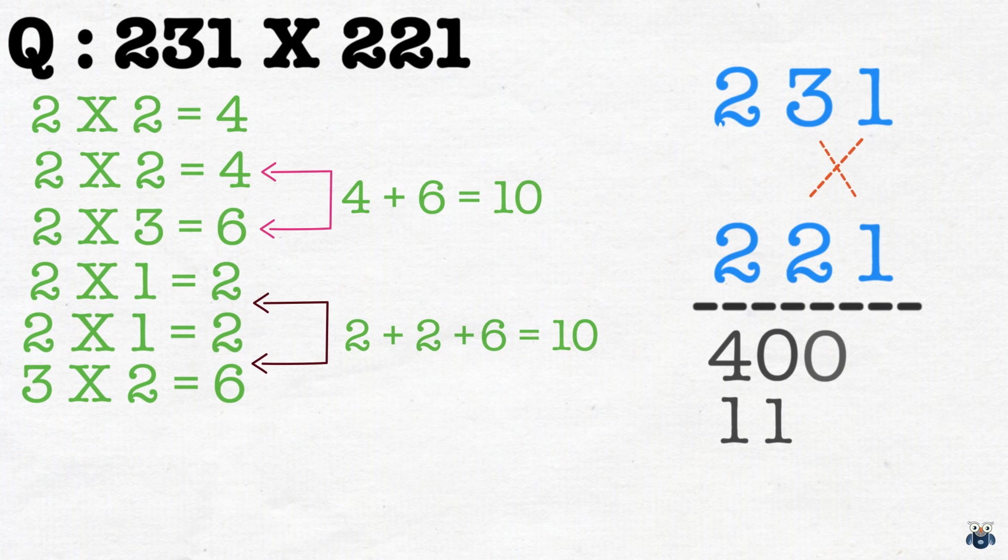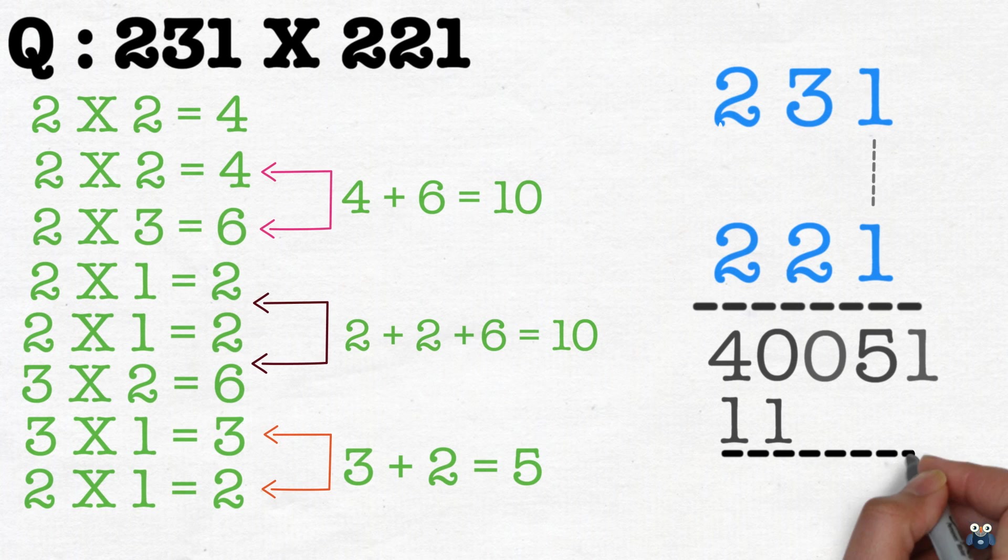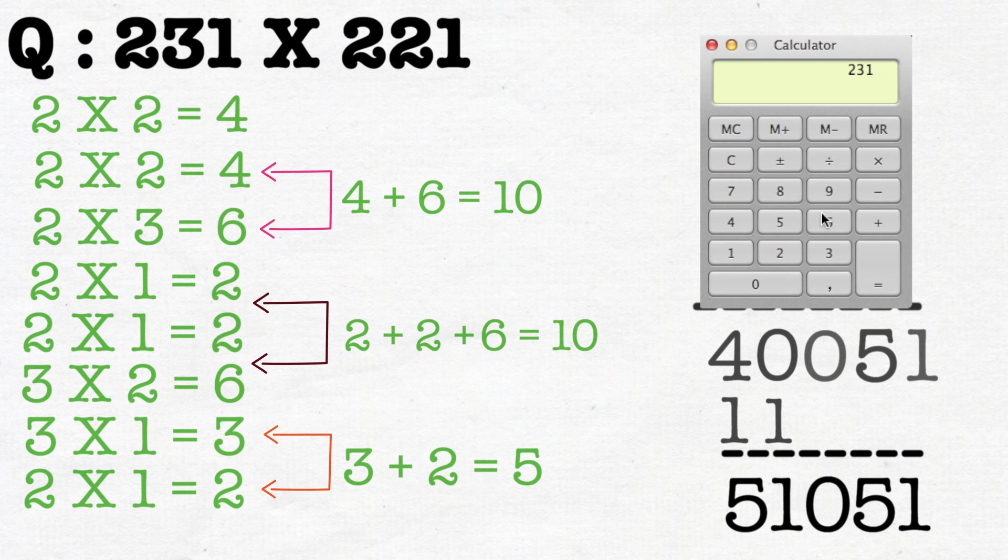Now we cross multiply these four digits on the right. 3 times 1 is 3. And 2 times 1 is 2. And adding these results, we get 5. Finally, we multiply the last two digits. 1 times 1 is 1. Let's write this down. Our final answer is 51,051. But is it correct? Let's quickly find out. Yes, it is the correct answer.